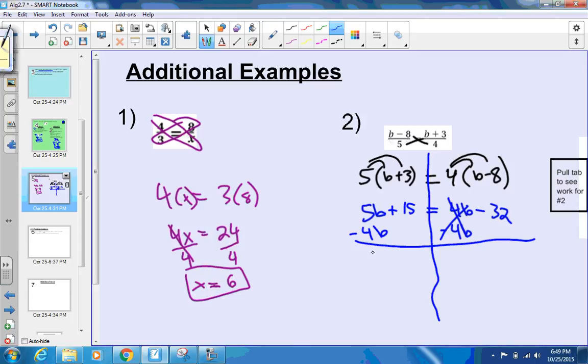So that cancels out, and we'll subtract the 4b over here. That leaves us with 1b, or simply just b, plus 15, equals negative 32. Last step to solve for this would be to subtract 15 from both sides, because b is by itself. There's no coefficient in front of the b. We can do negative 32 minus 15. They're both negative, so it's going to be a bigger negative. That would be negative 47.